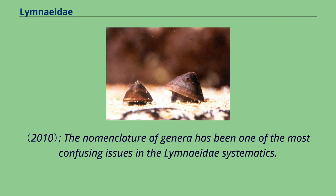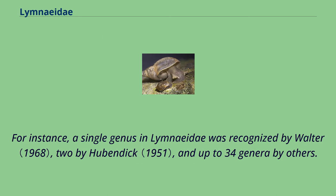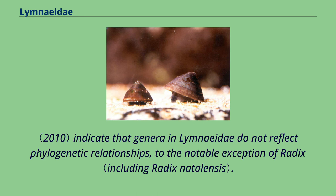The nomenclature of genera has been one of the most confusing issues in Limeidae systematics. It demonstrates that the nomenclature of most genera in Limeidae does not reflect evolutionary relationships. Most genus names are not fixed and are based more on phenotypic resemblances than on sound evolutionary and phylogenetic considerations. For instance, a single genus in Limeidae was recognized by Walter, two by Hubbendick, and up to 34 genera by others. Results by Coria et al. indicate that genera in Limeidae do not reflect phylogenetic relationships, with the notable exception of Radix.